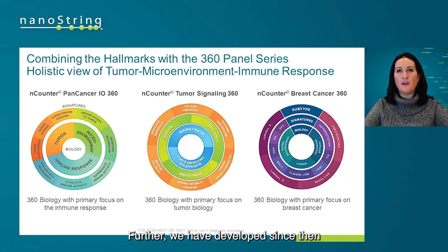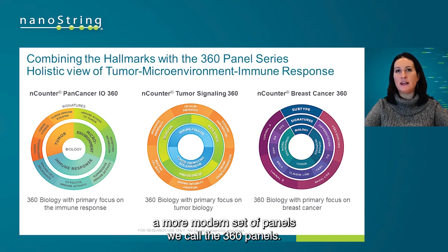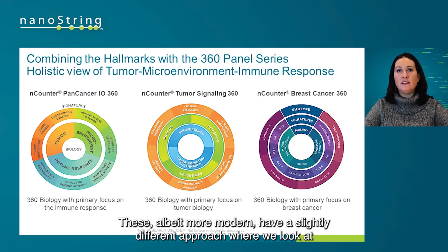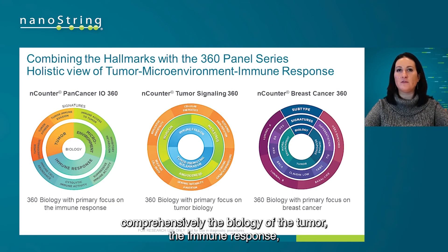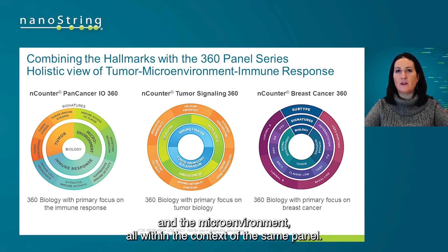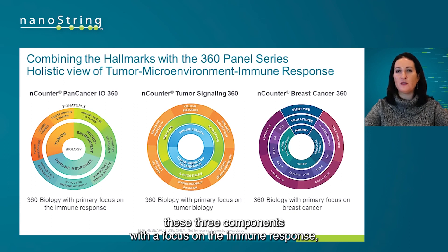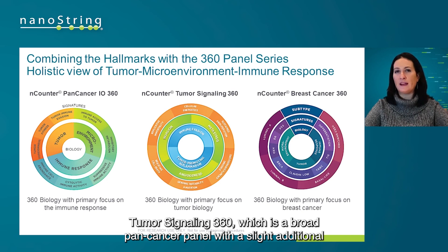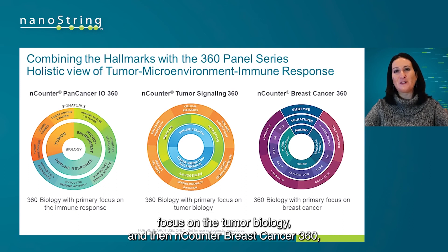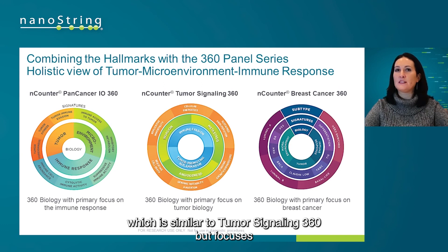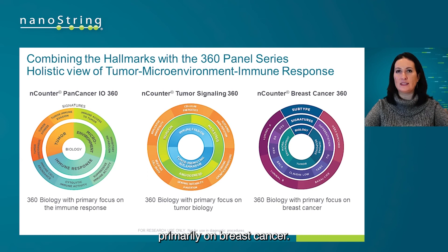We have also developed a more modern set of panels we call the 360 panels. These take a slightly different approach, comprehensively looking at the biology of the tumor, the immune response, and the microenvironment all within the context of the same panel. We have three of these: IO360, looking at all three components with a focus on the immune response; Tumor Signaling 360, a broad pan cancer panel with additional focus on tumor biology; and NanoString Breast Cancer 360, similar to Tumor Signaling 360 but focused primarily on breast cancer.